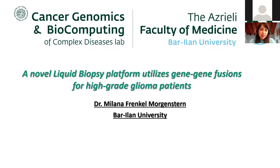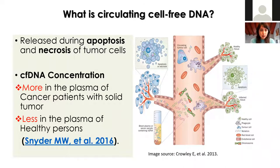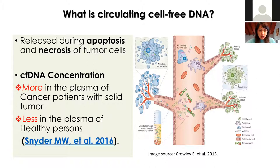First of all, I would like to explain what circulating cell-free DNA is. Cell-free DNA can be found in the blood of patients - in plasma, serum, or even other fluids. It's also present in healthy people, released during apoptosis and necrosis of tumor cells or other disease cells. Cell-free DNA concentration is higher in cancer patients, particularly with solid tumors, and really low in healthy people.